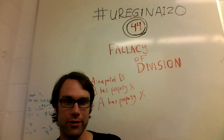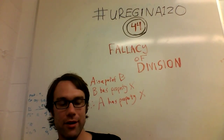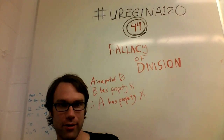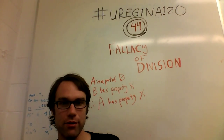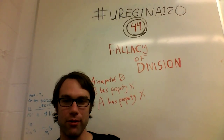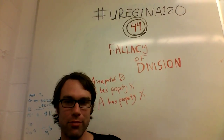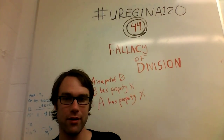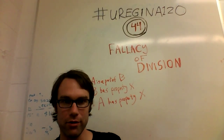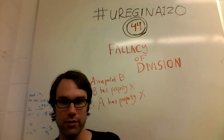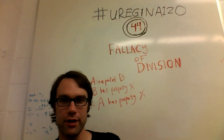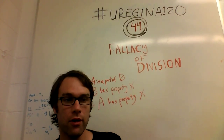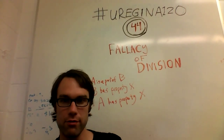Here's another example: sodium chloride, table salt, may be safely eaten; therefore its constituent elements, sodium and chlorine, may be safely eaten. Well, if you somehow manage to get chlorine in a form you can eat, if it's cold enough perhaps, you'll probably get burned, and if not burned, certainly poisoned. And sodium is helpful in small quantities, but in large quantities it will kill you. So you can't assume that the properties of the compound transfer to its constituent elements.